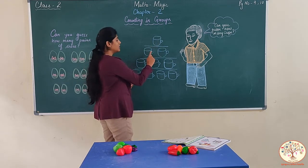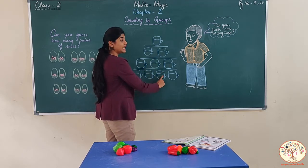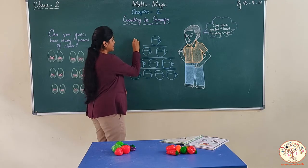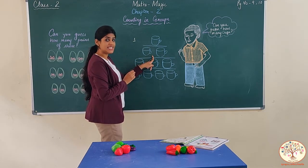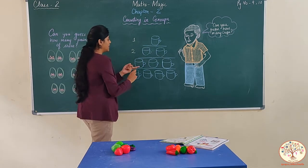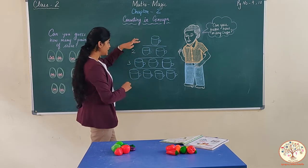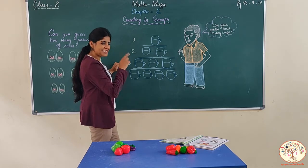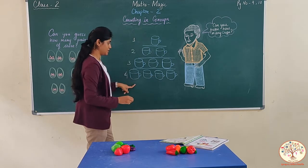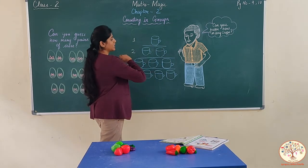Let's count: 1, 2, 3, 4, 5, 6, 7, 8, 9, 10. Now let us count in groups. First group has some cups, second group has 2. So 1 plus 2 equals 3. Then the next group also has 3. So 3 plus 3 equals 6. Then here we have 4 cups. 6 plus 4 equals 10. This is how you can count in groups.